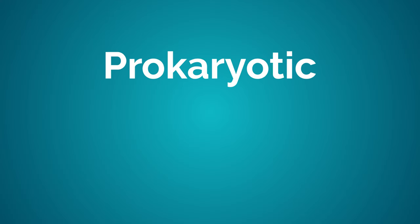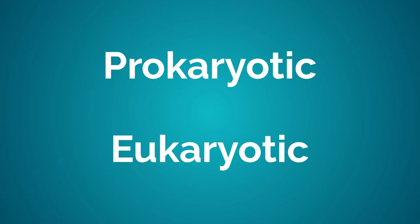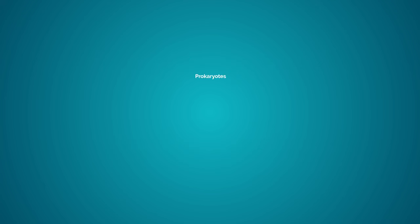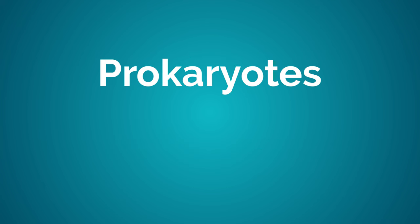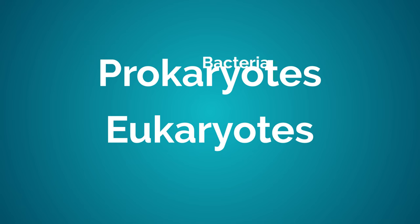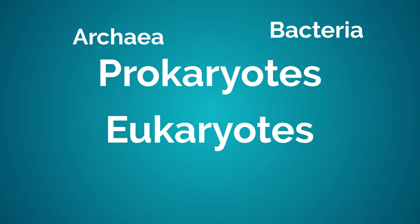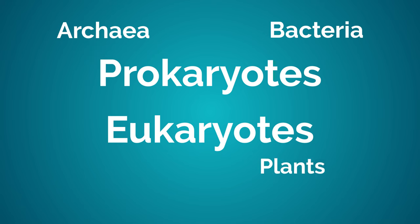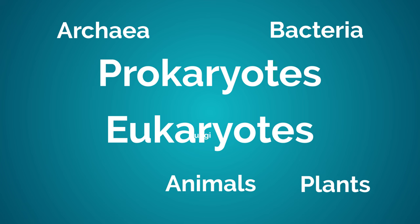In this video we are going to have a look at the similarities and differences between prokaryotic and eukaryotic cells. All cells are either prokaryotic or eukaryotic. Organisms with prokaryotic cells are called prokaryotes and organisms with eukaryotic cells are eukaryotes. Bacteria and archaea are prokaryotes whereas plants, animals, fungi and all other organisms are eukaryotes.